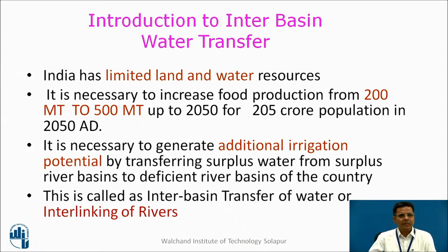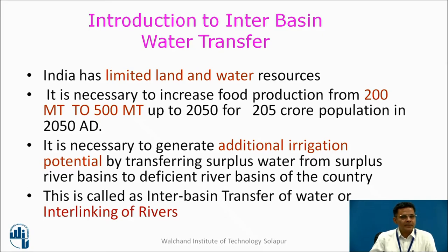Introduction to Interbasin Transfer of Water. India has limited land and water resources. It is necessary to increase food production from 200 million tons to 500 million tons up to 2050 for 205 crore population expected in India by 2050 AD. Hence, it is necessary to generate additional irrigation potential by transferring surplus waters from surplus river basins to deficient river basins. This is called interbasin transfer of water or interlinking of Indian rivers.